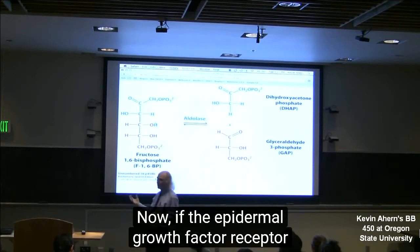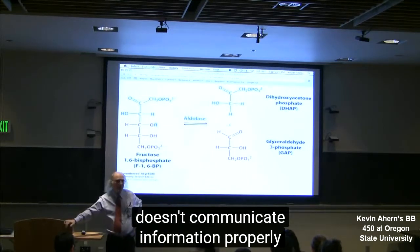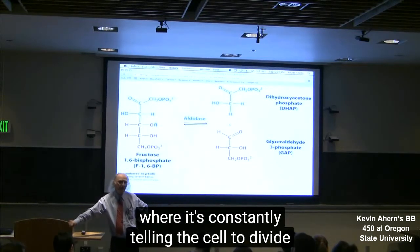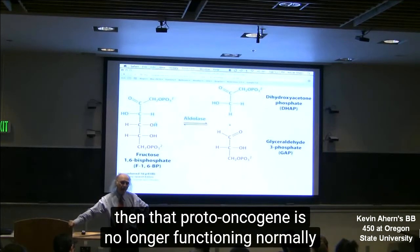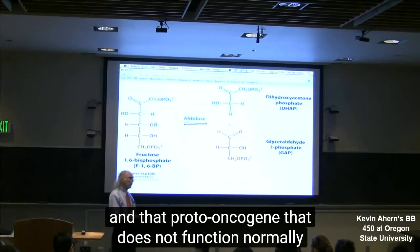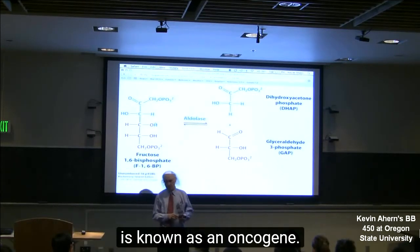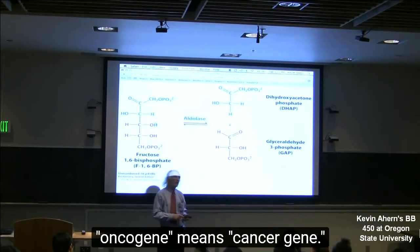Now, if the epidermal growth factor receptor doesn't communicate information properly, let's say it gets left in the ON state where it's constantly telling the cell to divide, then that proto-oncogene is no longer functioning normally, and that proto-oncogene that does not function normally is known as an oncogene. The reason it's known as an oncogene is the term oncogene means cancer gene.